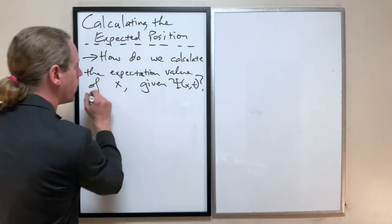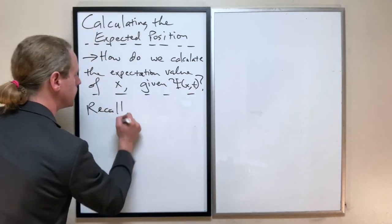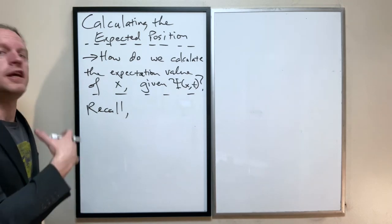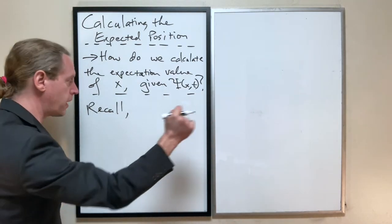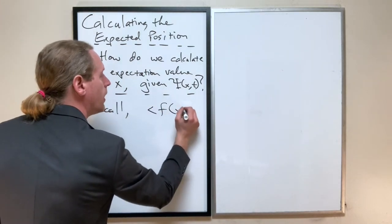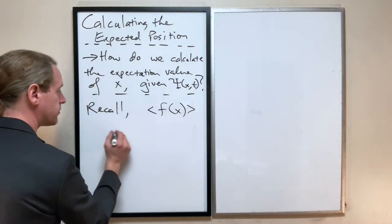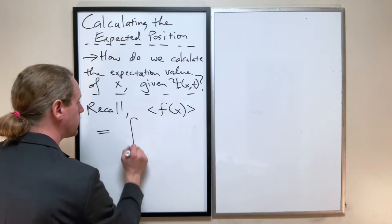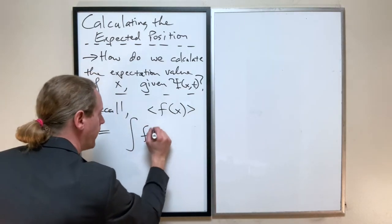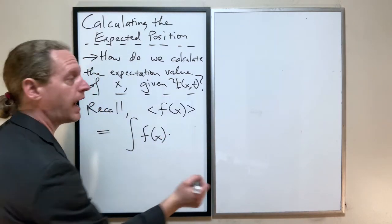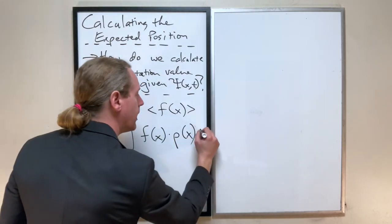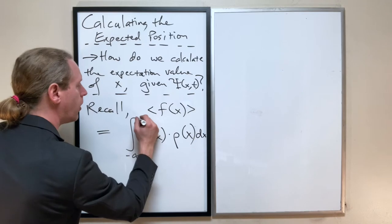So recall, the expectation value of any function, if you know a probability distribution, so thinking classical probability distributions, the expectation value of any function f of x is given by this. You take the integral of that function f of x weighted by how likely that answer x is to be at all points across all range.